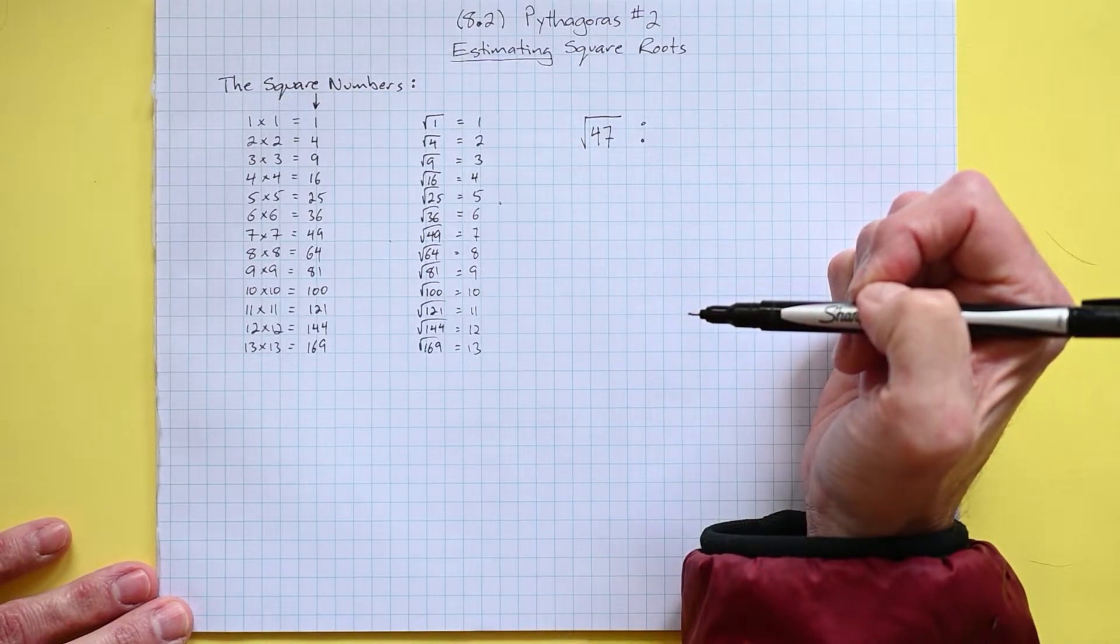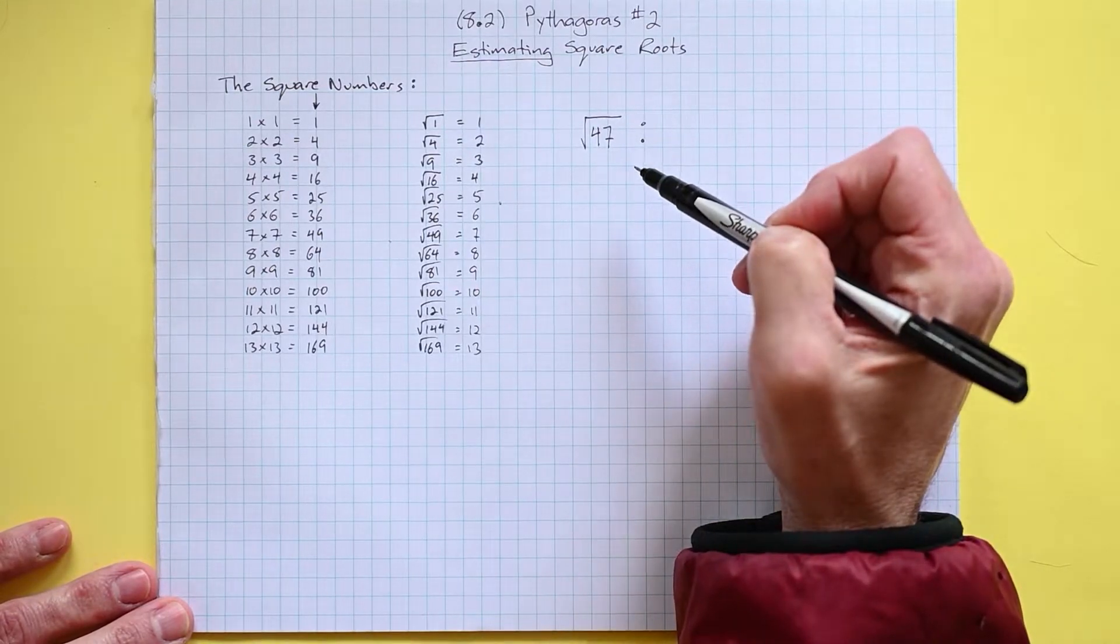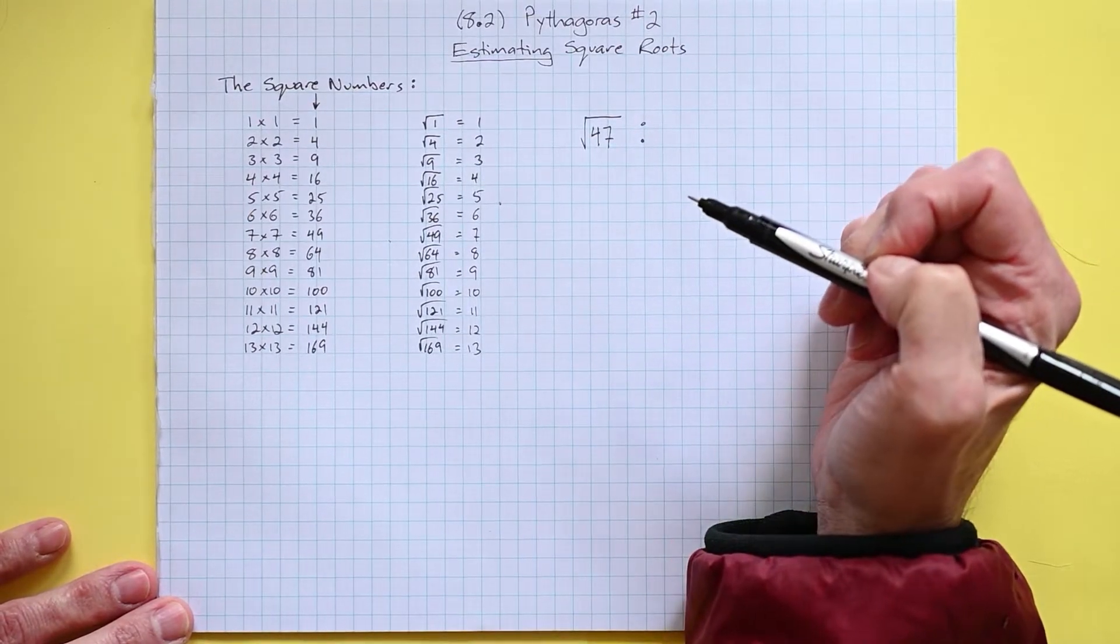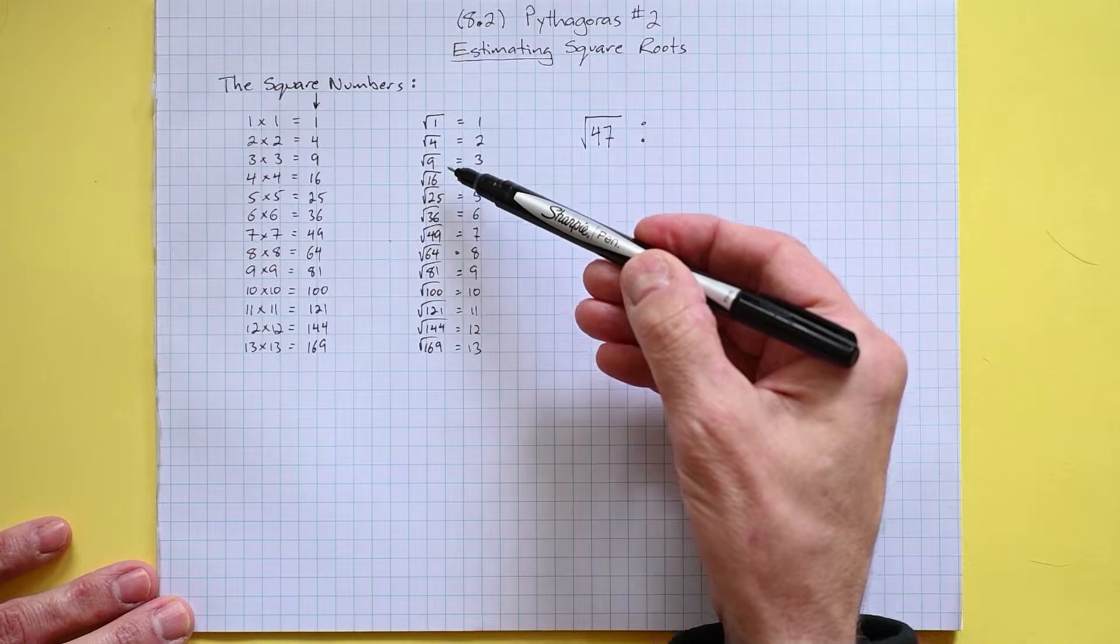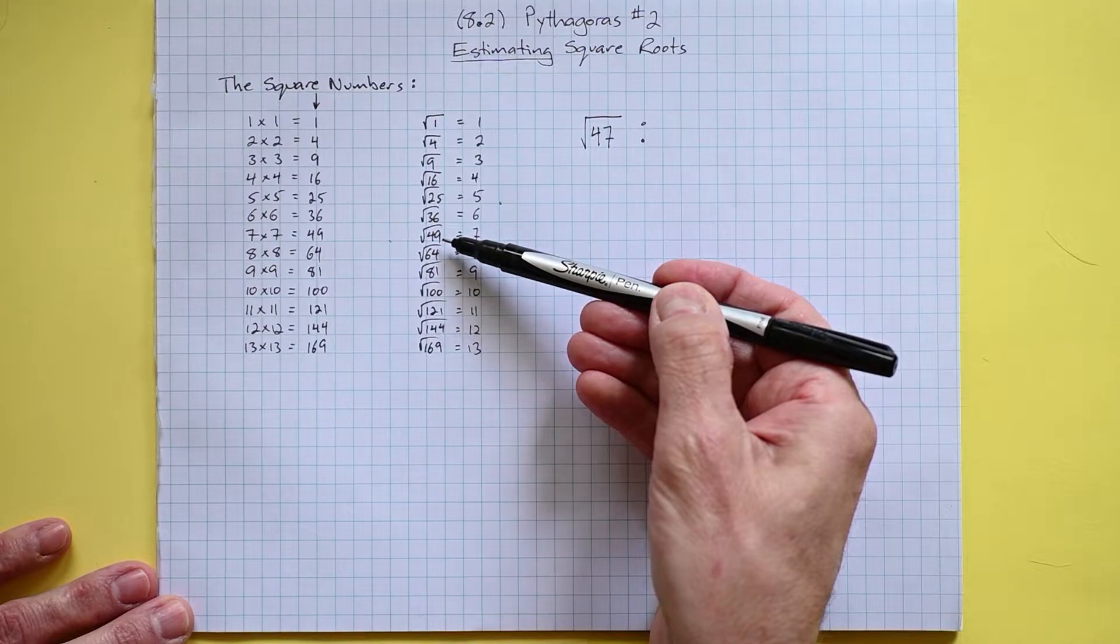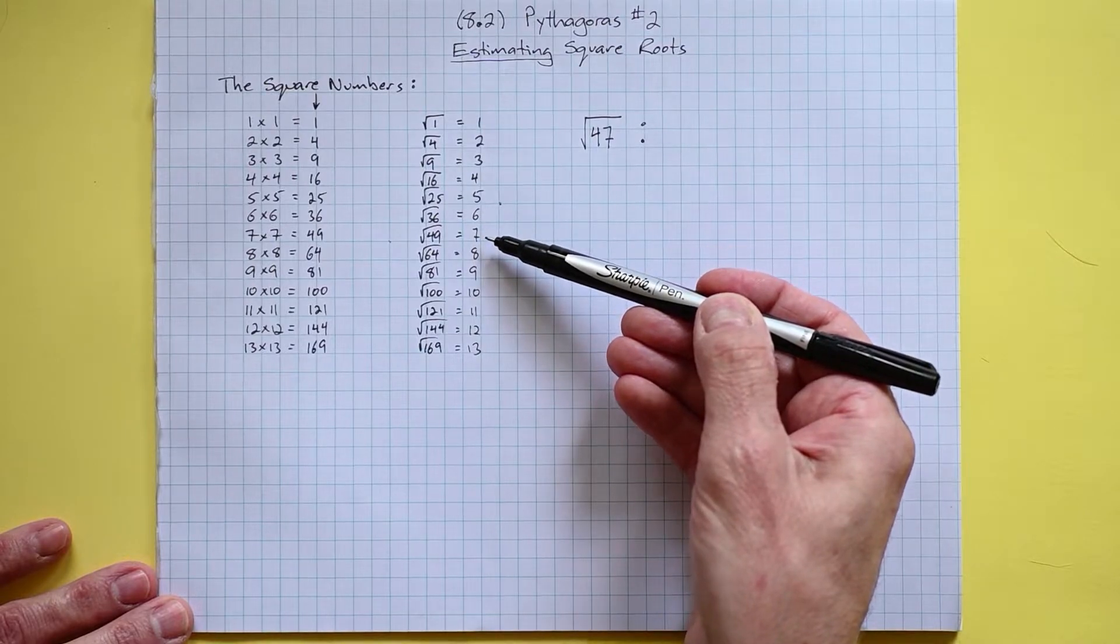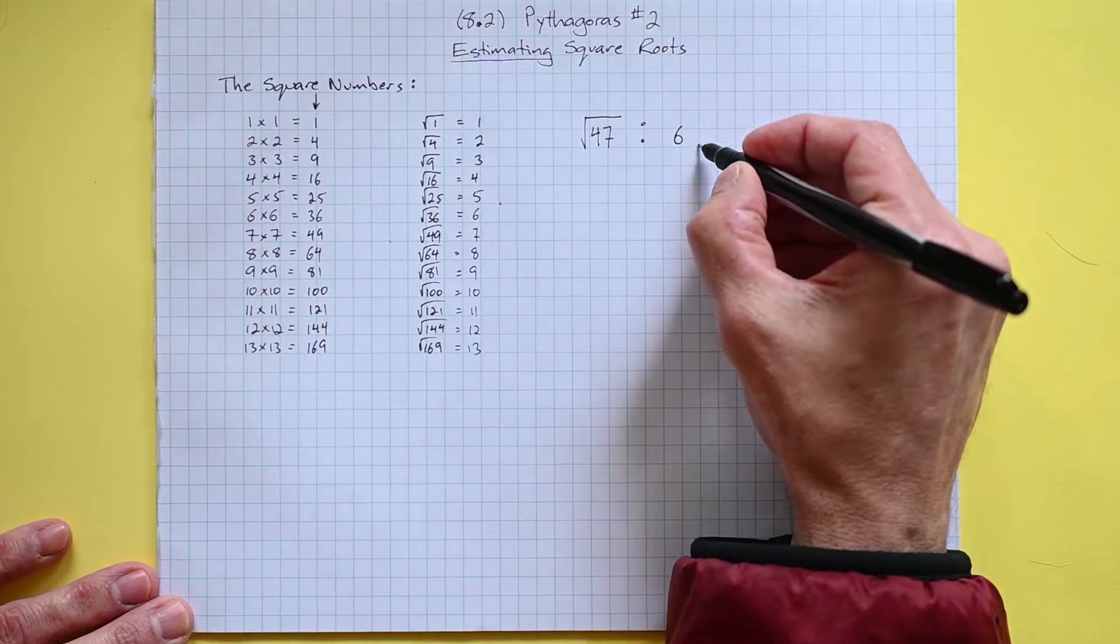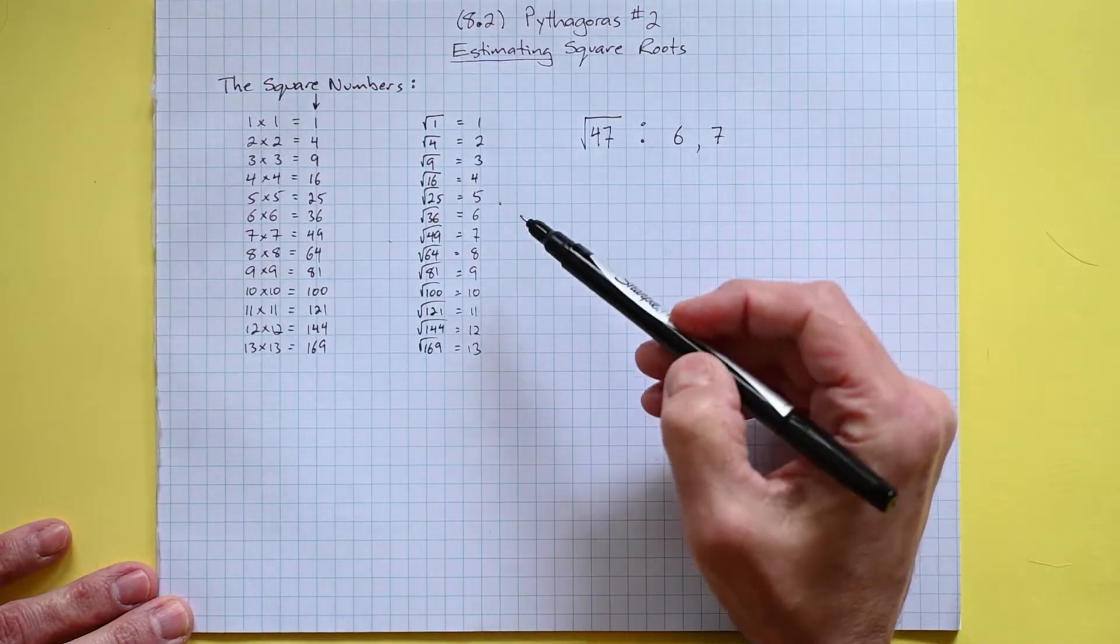Let's take the number 47 and let's find out a way to estimate its square root. We're looking for a number which multiplied by itself will result in 47. The key to doing this is to see which two square numbers does 47 lie between. We can see that 47 is somewhere between the 36 and the 49. The square roots of these numbers are 6 and 7, so we know the square root of 47 must lie somewhere between 6 and 7.